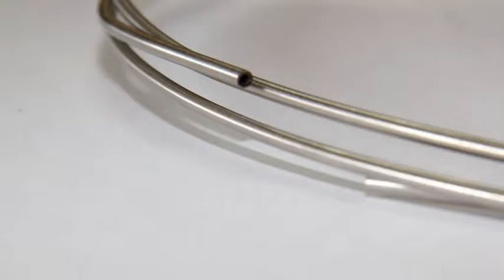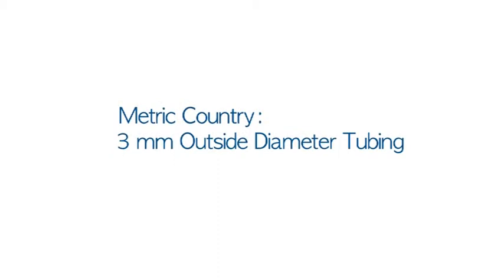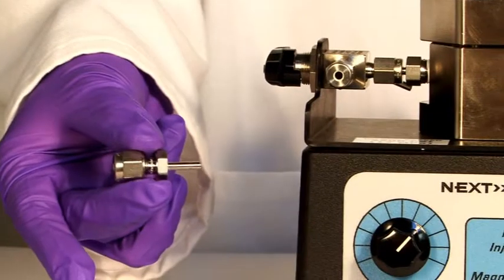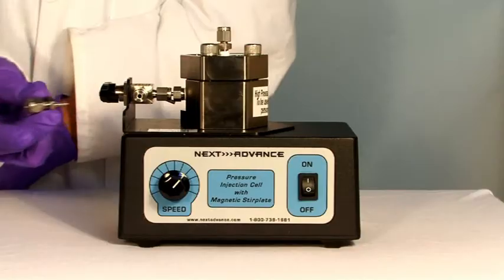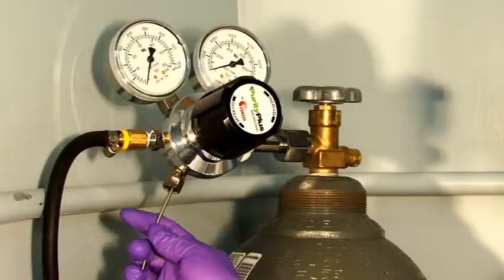In the United States, eighth-inch outside diameter tubing is standard and your pressure cell is already equipped with the proper fittings. If you're in a metric country and want to use three-millimeter outside diameter tubing, use the three-millimeter to eighth-inch adapter to connect the tubing to the pressure cell inlet.